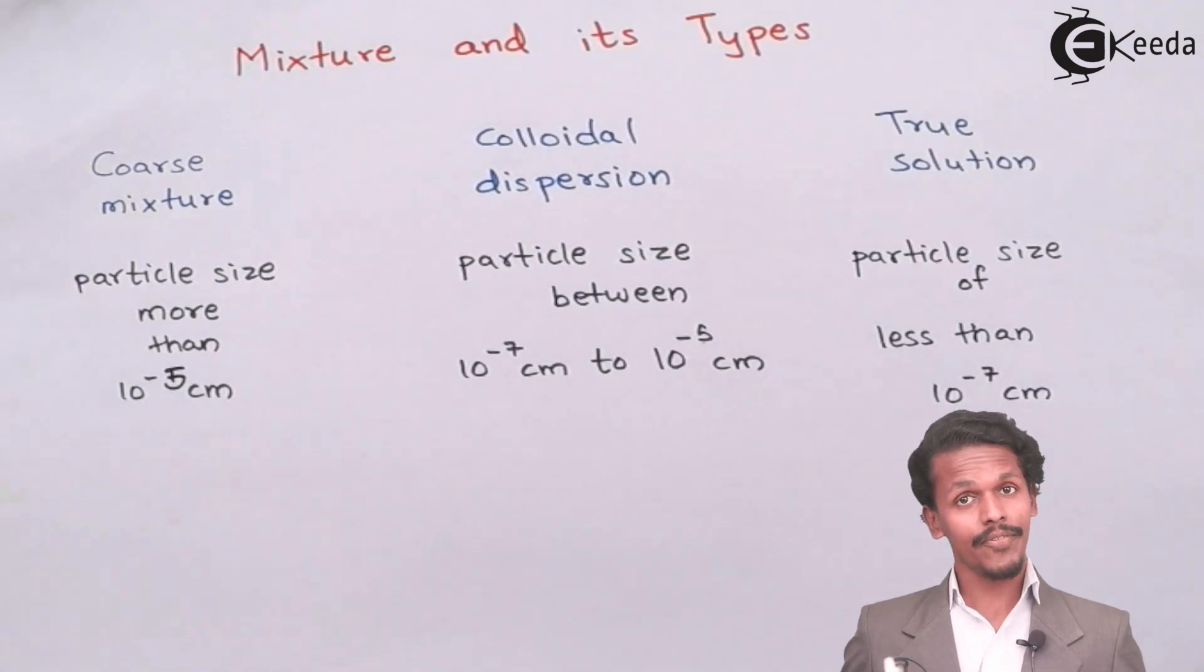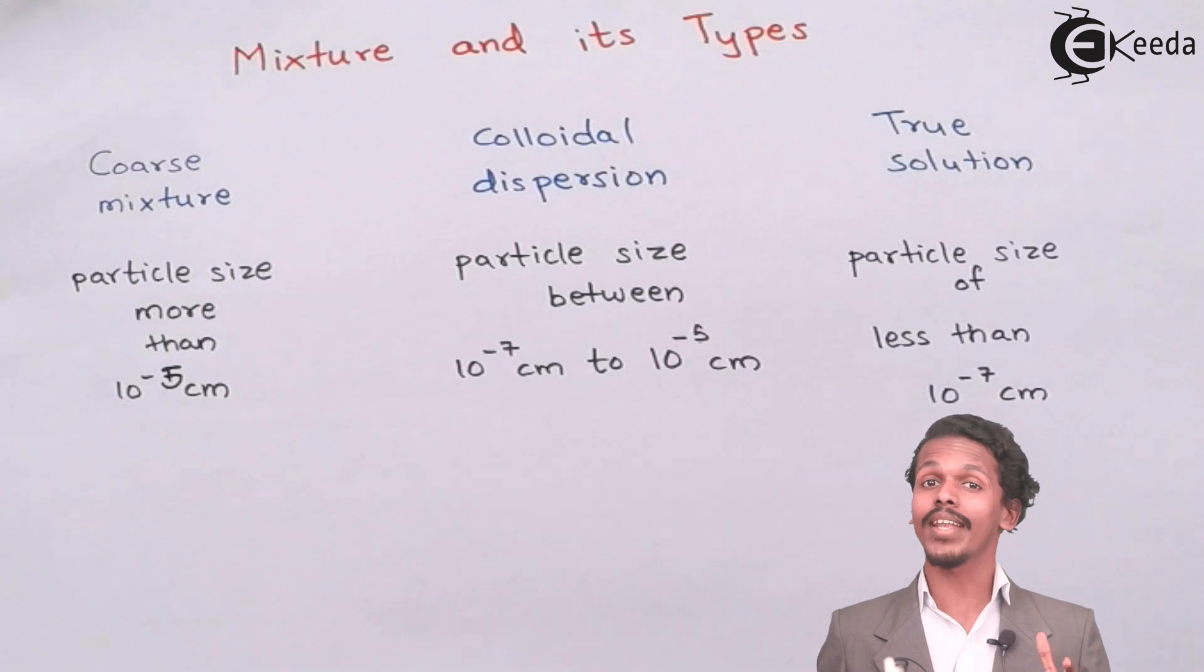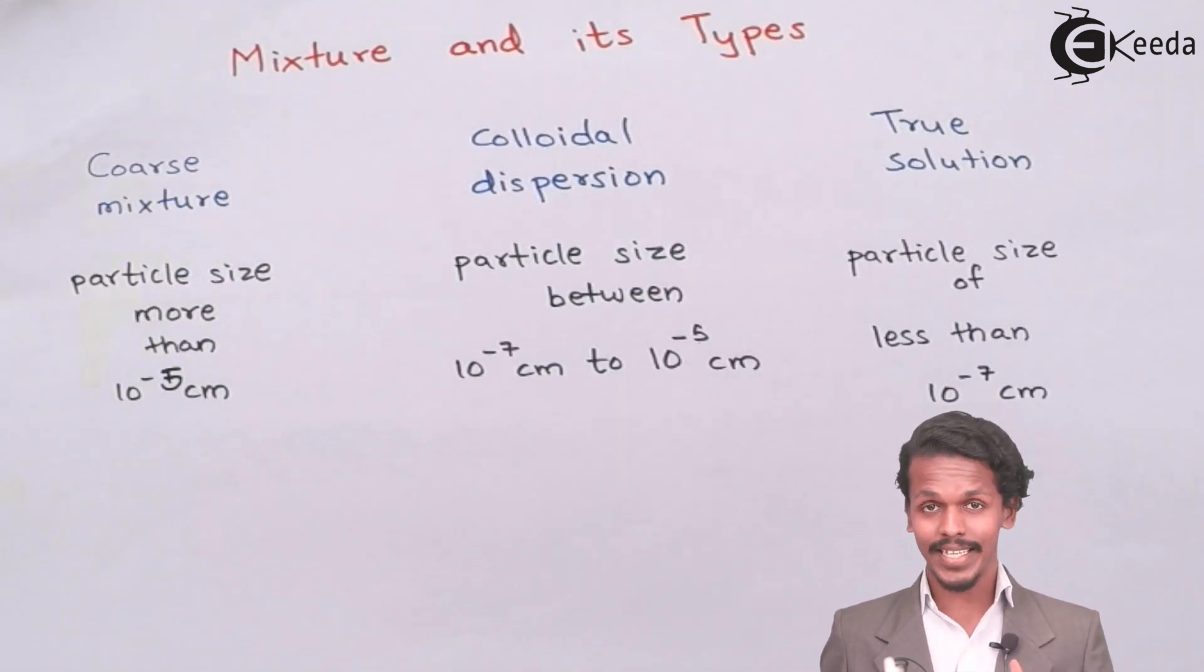It would be very much better if we do the examples of each and every term to understand what are the types of mixture. The first one that I want to describe with their example is Coarse Mixtures.